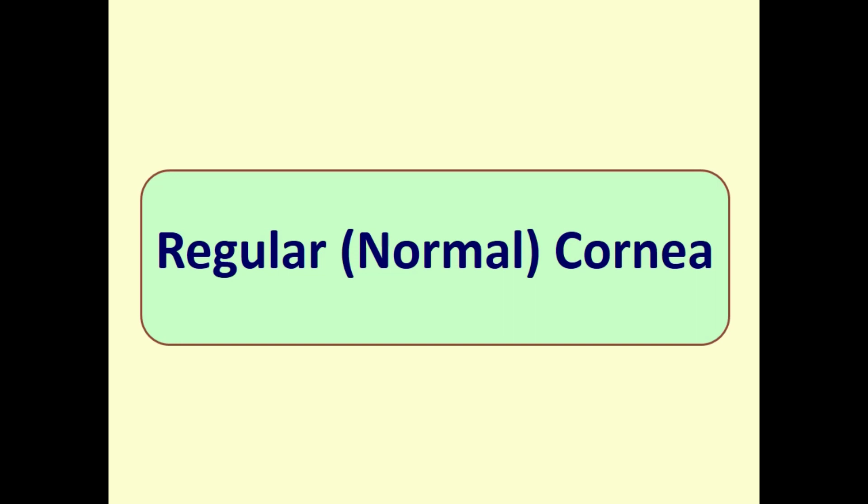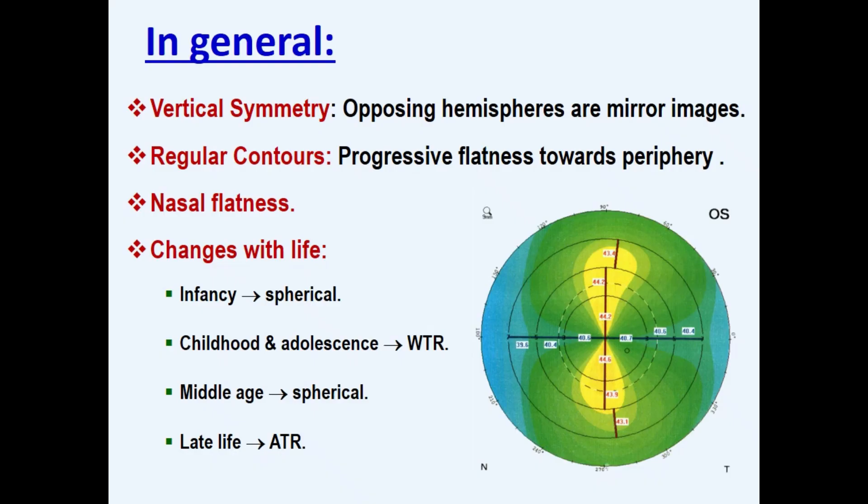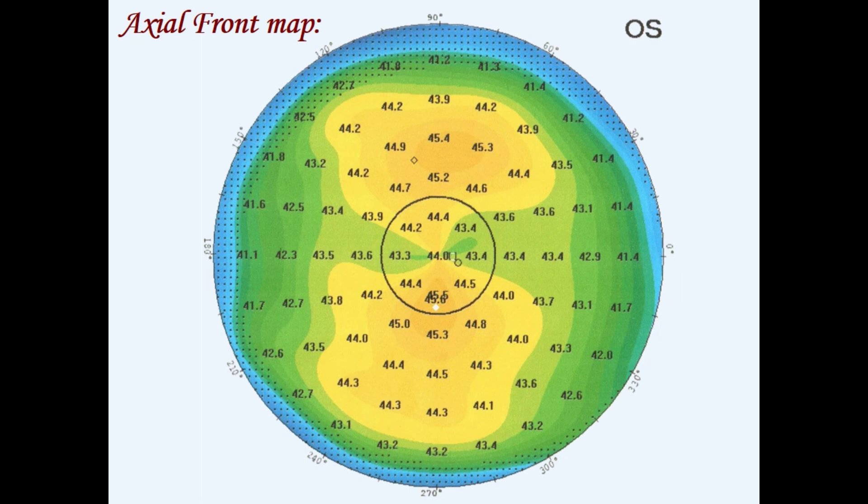The regular cornea has the following characteristics: the apex or steep portion is close to its geometric center. There is a high degree of symmetry between the upper and lower halves around the horizontal meridian. The cornea flattens towards the periphery, and the nasal cornea is slightly flatter than the temporal. The blue color appears earlier on the nasal side. Normal cornea has relatively smooth contours.